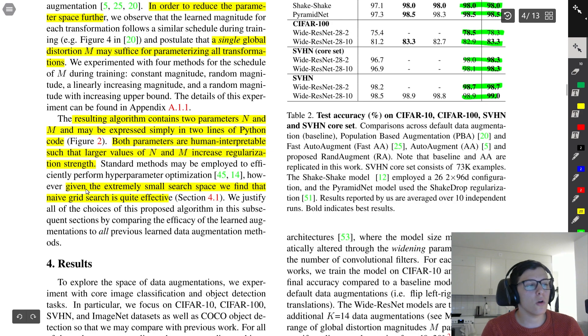Given that it's a very small search space over just those two hyperparameters, they can do a naive grid search and they find that to be quite effective.